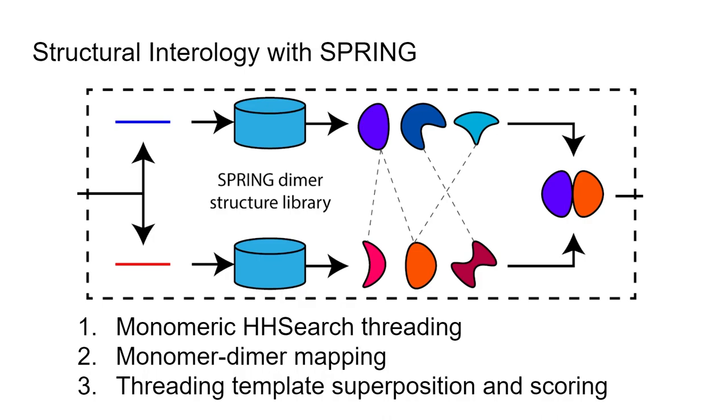The more complicated structure approach uses threading instead of sequence searching. We do a threading search using HH search through a structure template database. Based on hits, we construct a dimer model of the interaction. We then score interaction likelihood based on how well-formed that dimer model is.